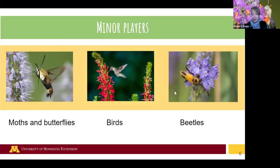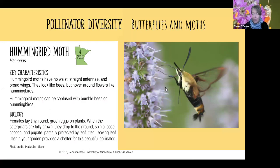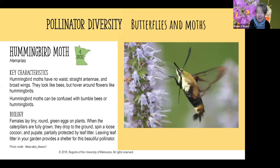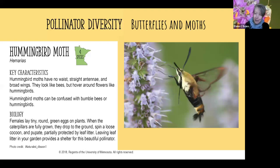Looking at these 'minor player' pollinators, we have moths, butterflies, birds, and beetles. Among the butterflies and moths, I wanted to highlight the hummingbird moth. In Minnesota we have four different species of hummingbird moths, and at first you might think one was a bee if you see it flying around — but we'll talk about the differences later.